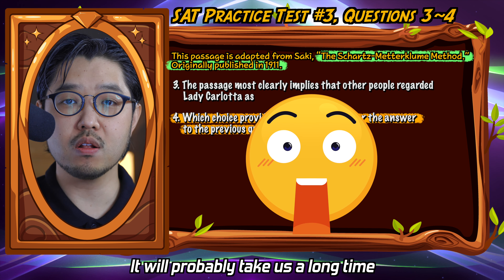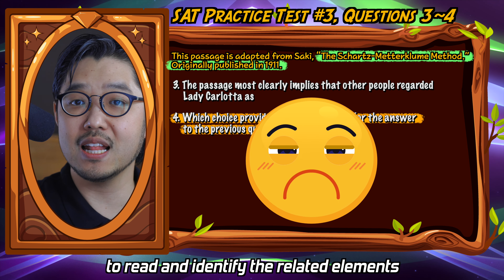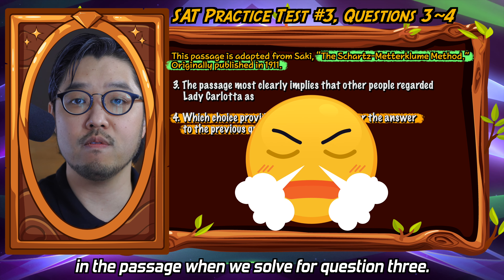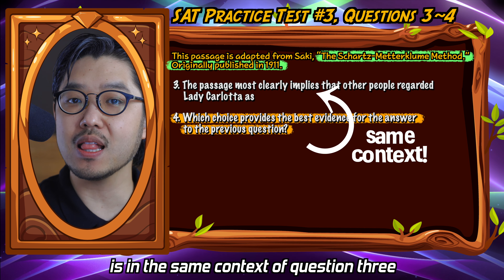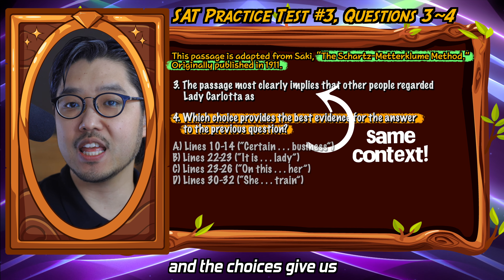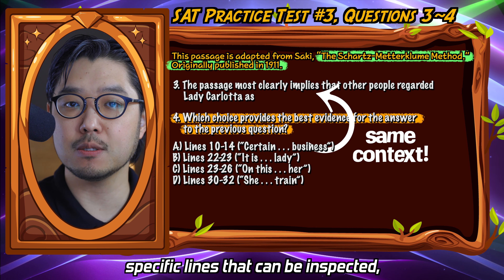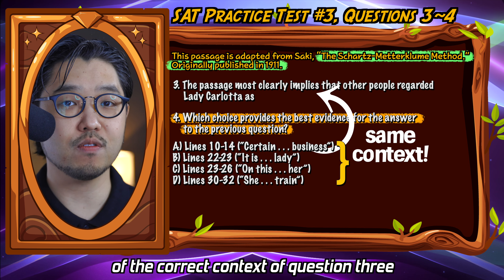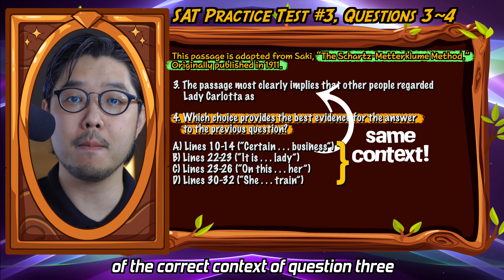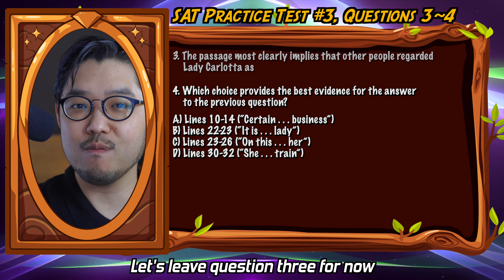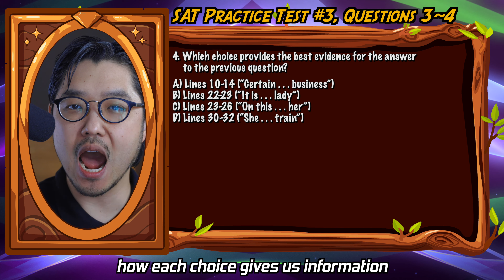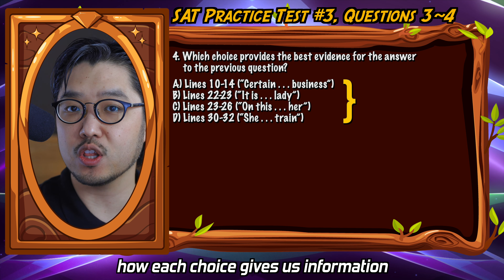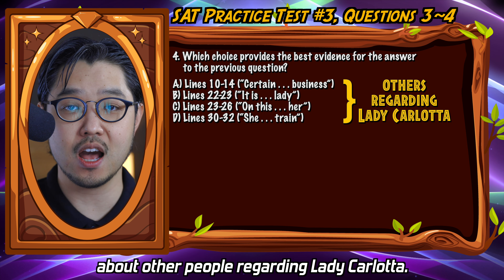It would probably take a long time to read and identify the related elements in the passage when solving question three. However, because question four is in the same context as question three and the choices give us specific lines that can be inspected, we can gain understanding of the correct context of question three by solving question four. Let's leave question three for now and go over the choices in question four.